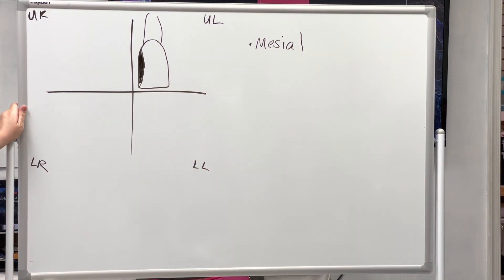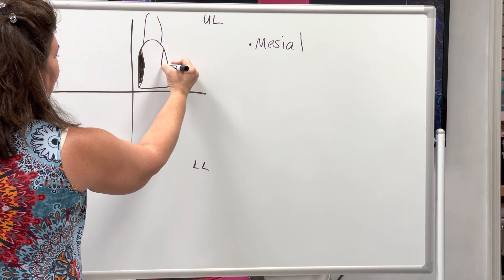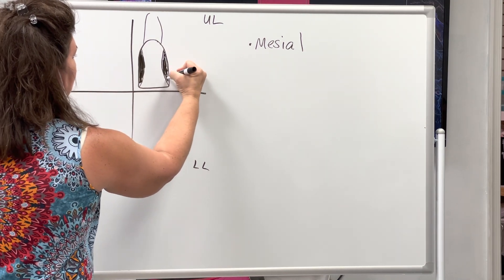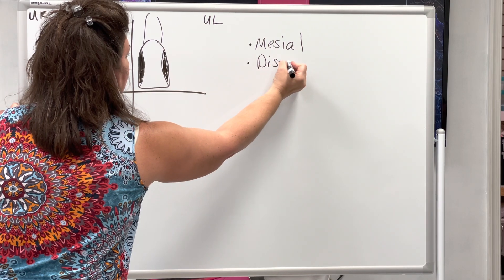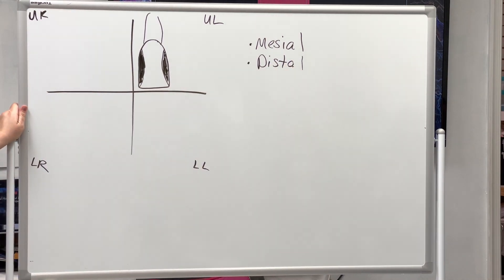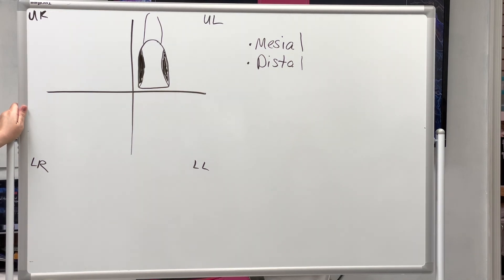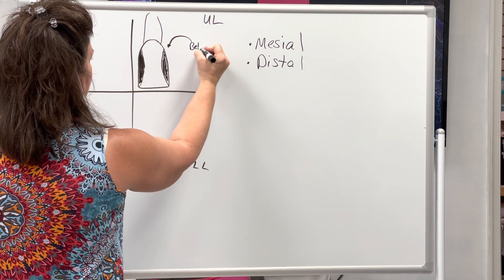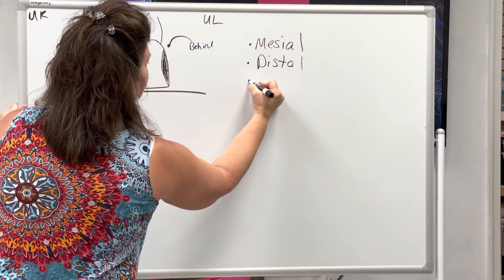Don't forget to take a picture of this at the end. The part of the tooth that's furthest away from the midline is called the distal. Now if everybody closes their teeth together, you bite down. Everywhere that your tongue is touching, the back of the teeth is called the lingual. So behind the teeth is the lingual.